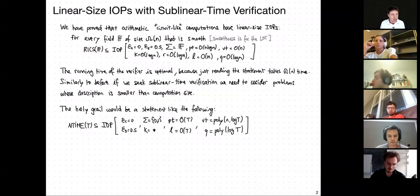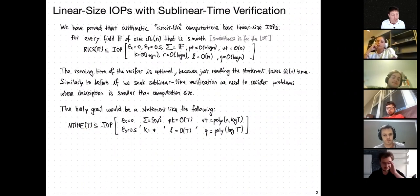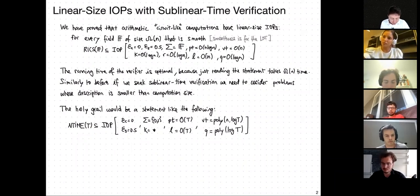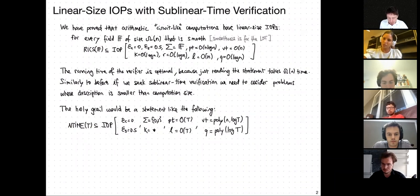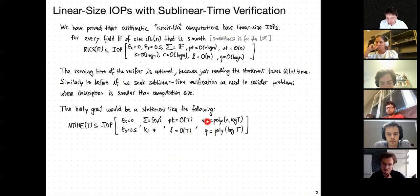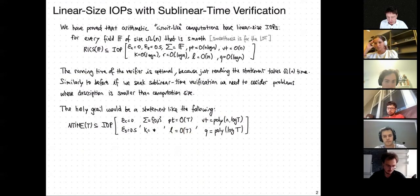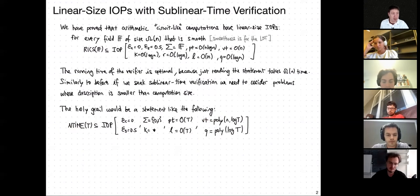Just like what you saw yesterday with Tom and the PCP for NEXP, if you want the verifier to run in time sublinear in the computation, the computation needs to have some structure — the description must be shorter than performing the computation itself. The holy grail would be to consider the general class of non-deterministic machine computations, class N-time-T, and have every language in N-time-T have an IOP with the usual perfect completeness and constant soundness.